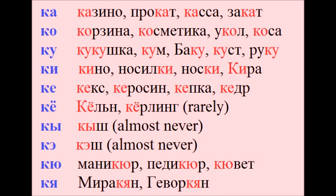Ki – кино, носилки, носки, кира. Ke – кекс, керосин, кепка, кедр. Ke – кёльн, кёрлинг. K – кыш. Кэ – кэш.